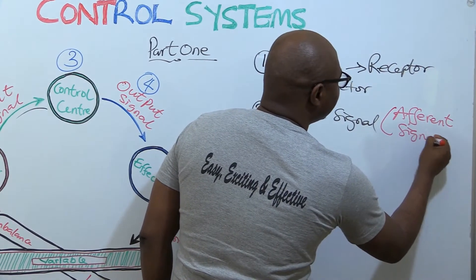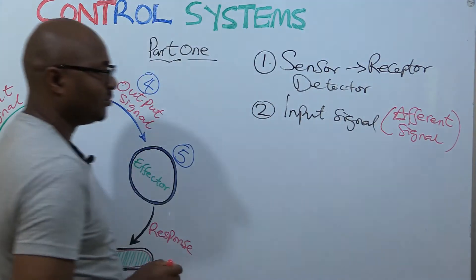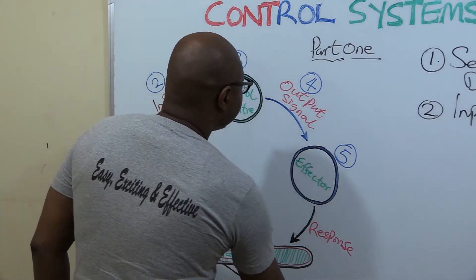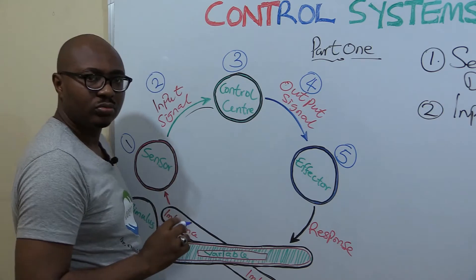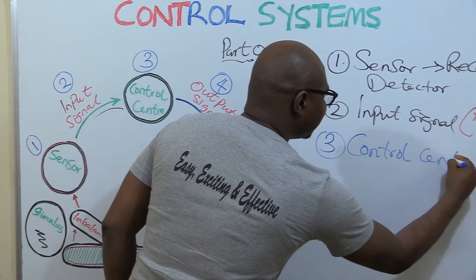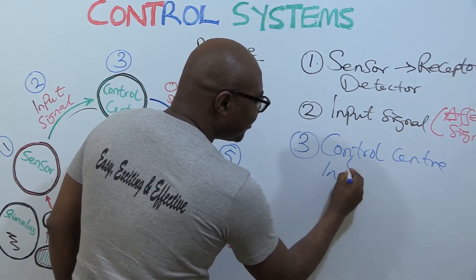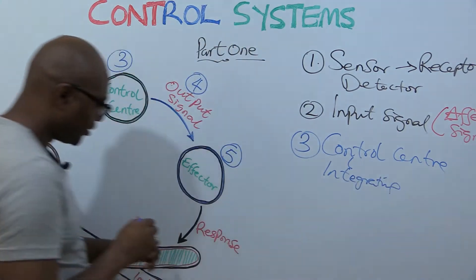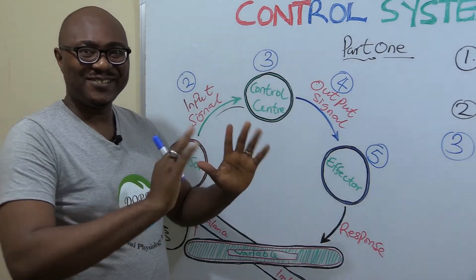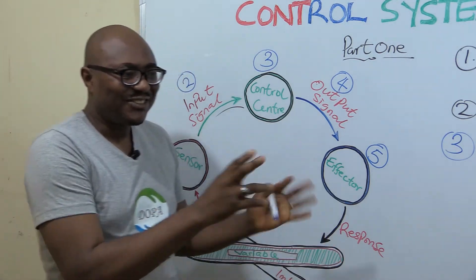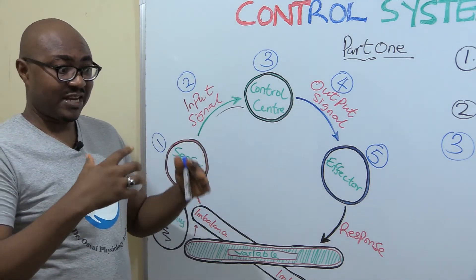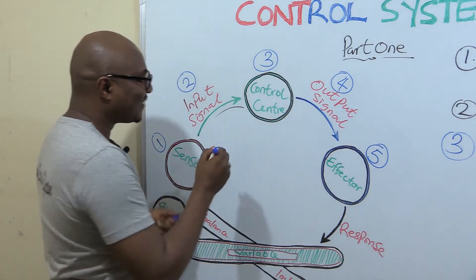Afferent signal - note it because there's another one that sounds similar. So now the control center is the third one. What do you think this control center does? Control center, also known as integrating center, is where the seat of decision making is. Just like a child - they'll go and report to the parent, 'Mommy, look at what this one has done,' then the parent will sit down and take a decision. So what happens here is decision making.